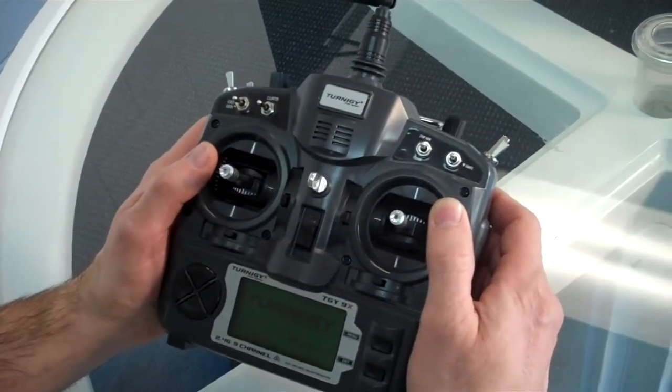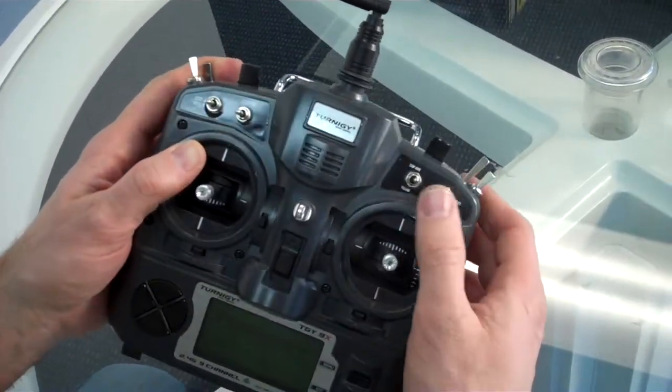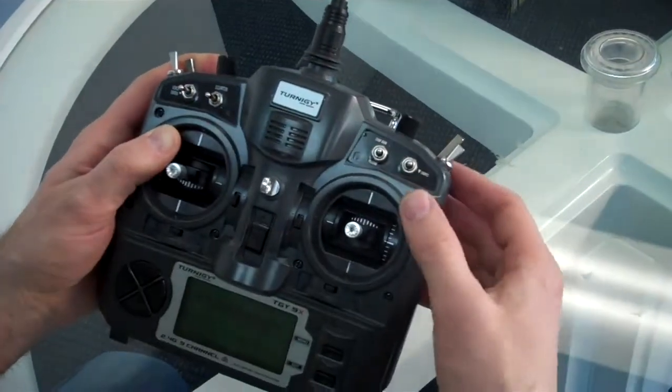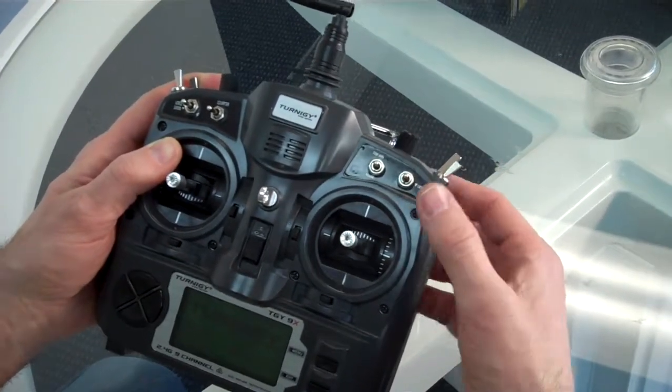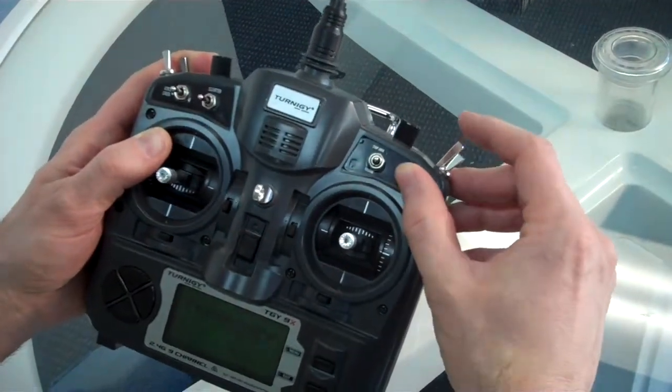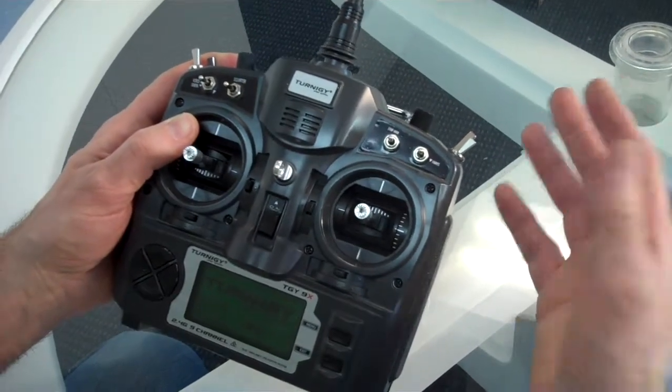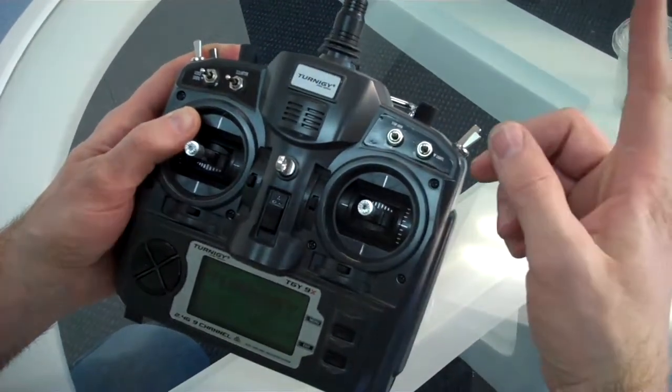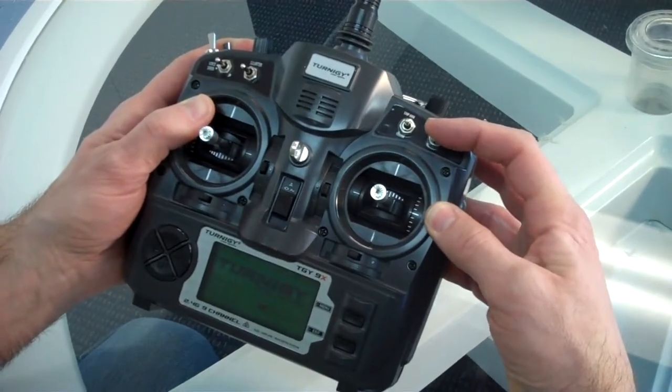For controlling the functions of the MP3 player, we're going to hold this switch down and then use these four switches. This switch over here is going to be your pause, play, and stop one. So if it's not playing currently, you can press that up and the MP3 player will start playing. If you press it again up, that will pause it. If you press it down, that will stop it. And then the next time you press play, it will start playing from the beginning.